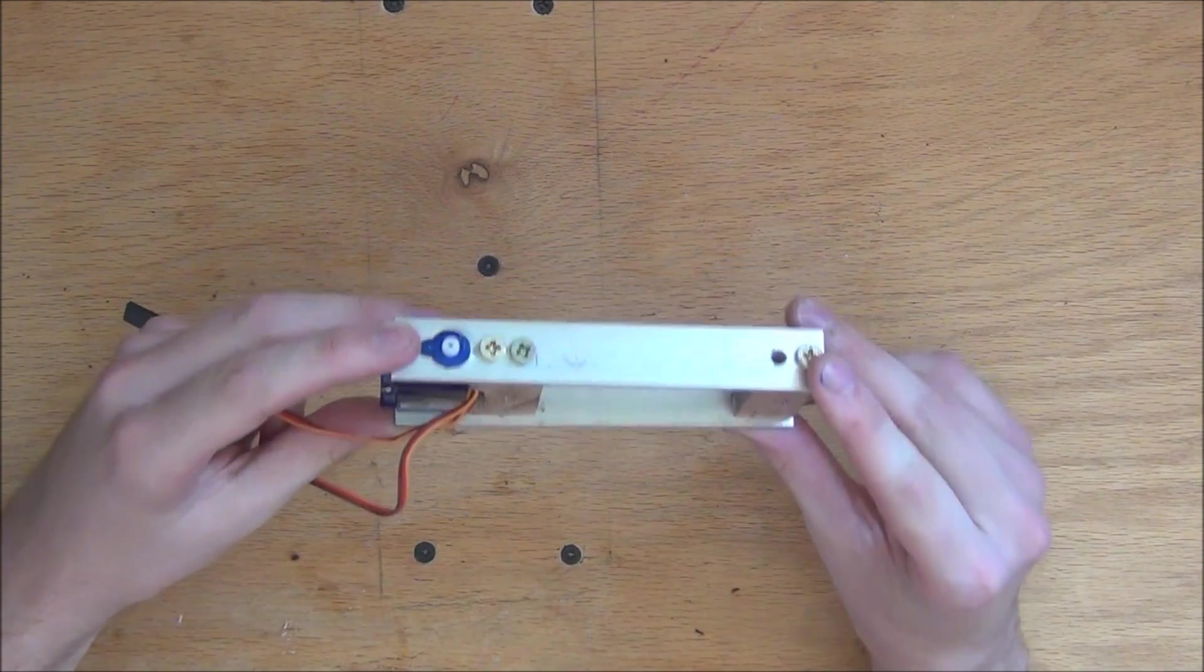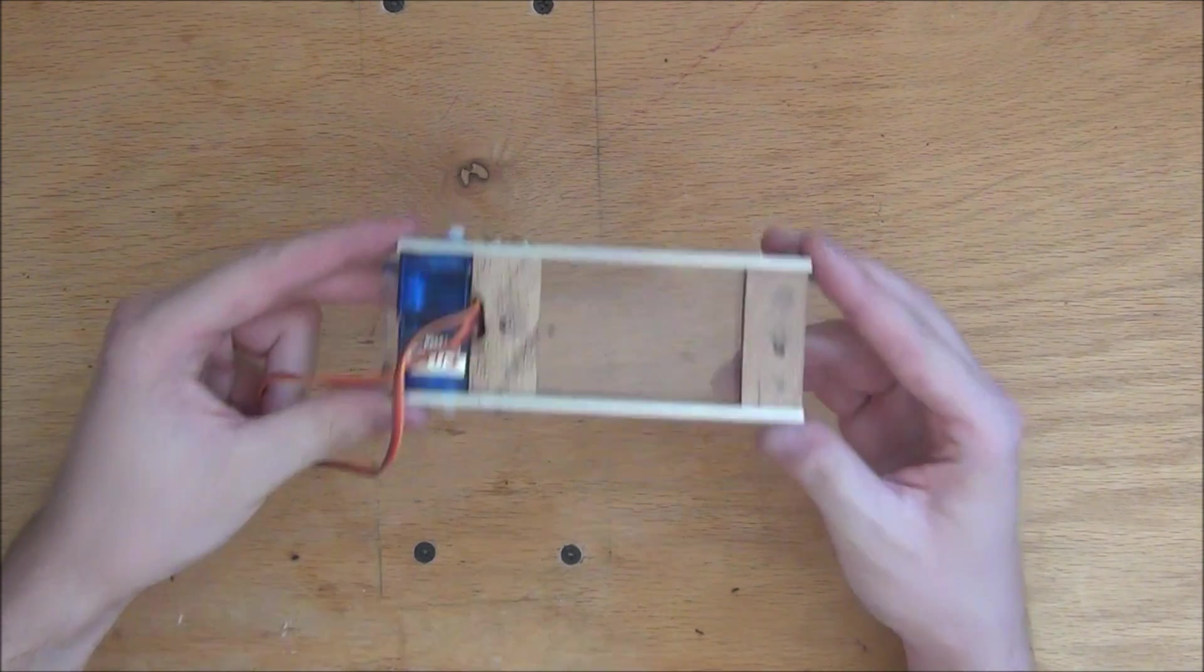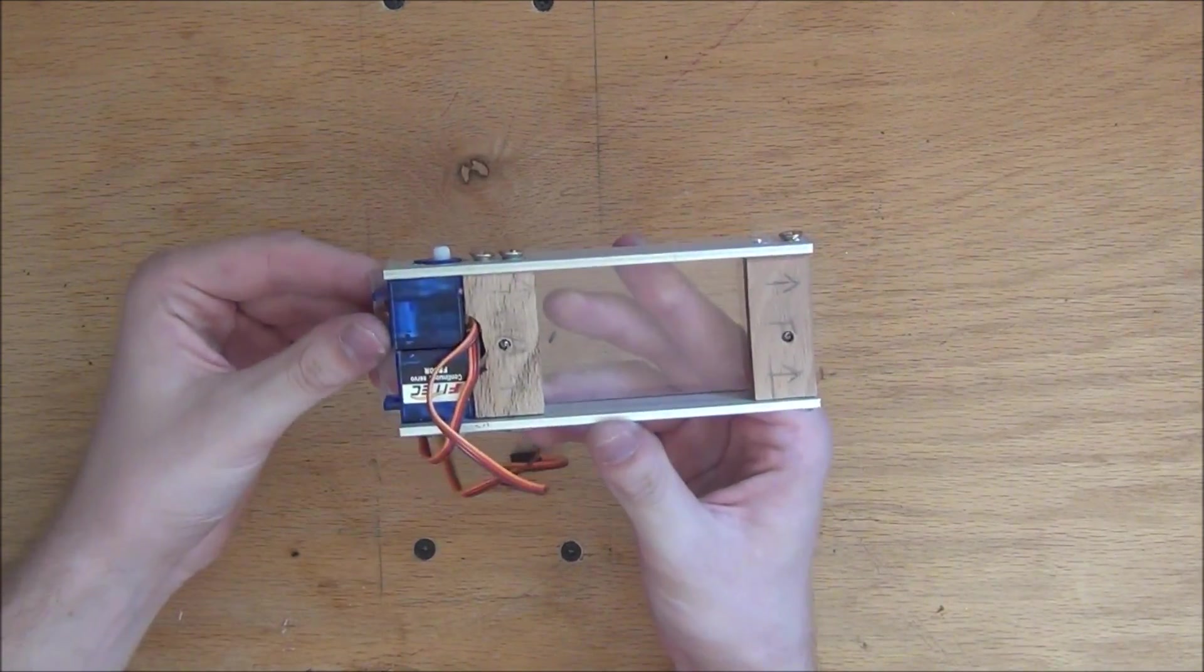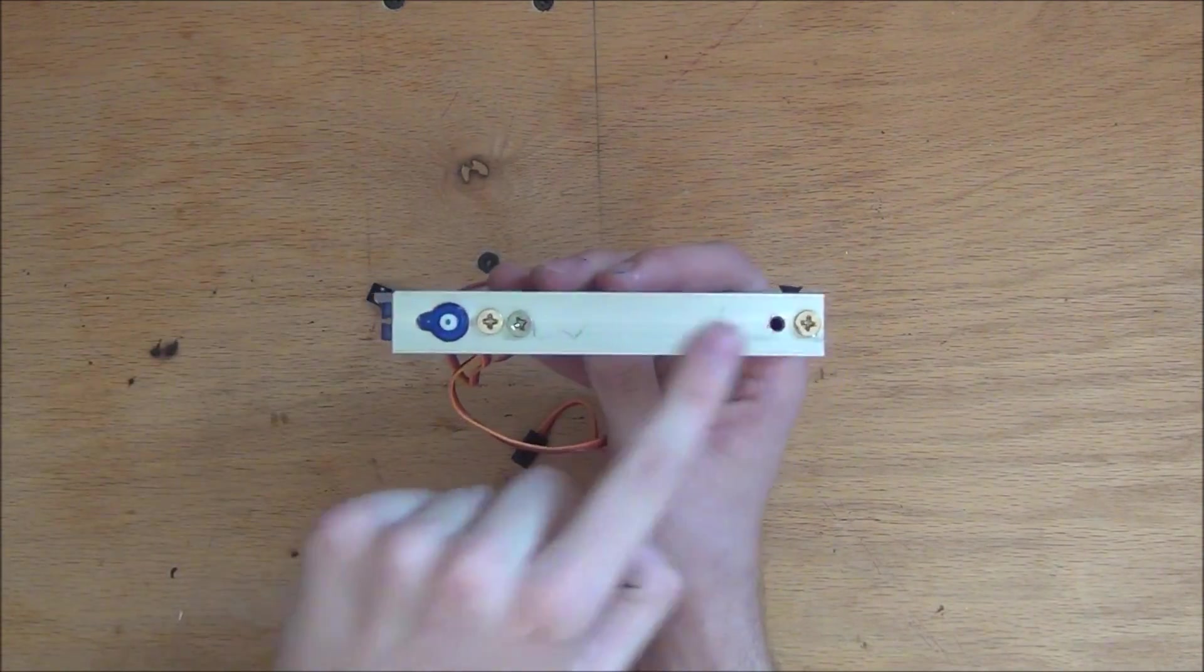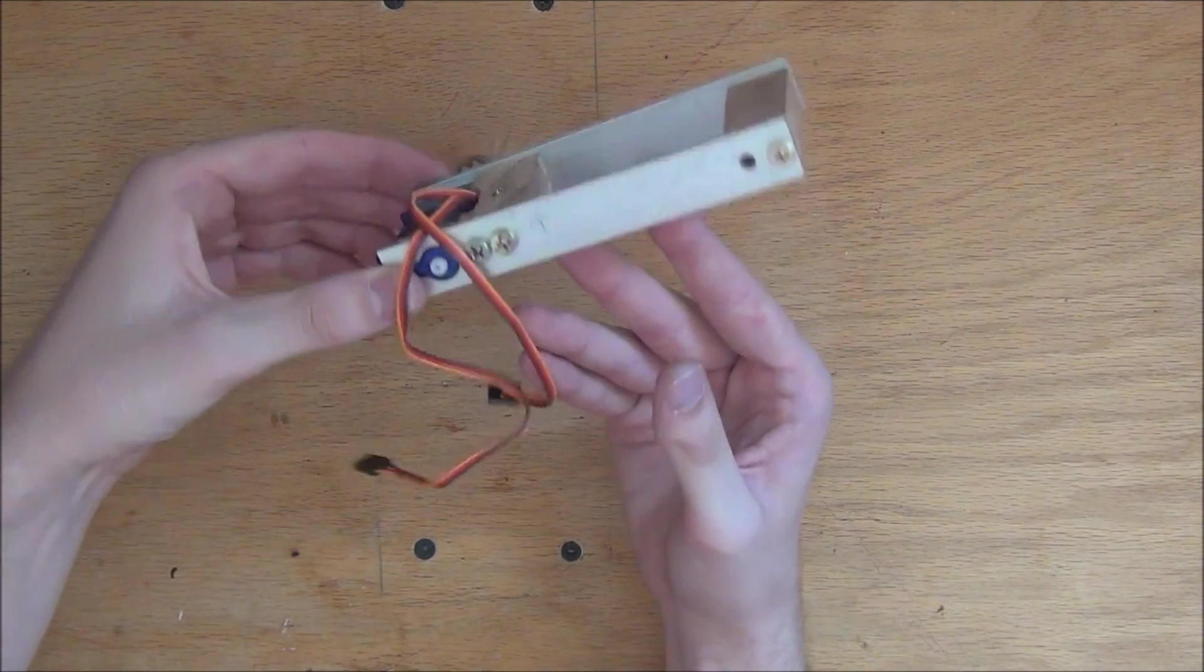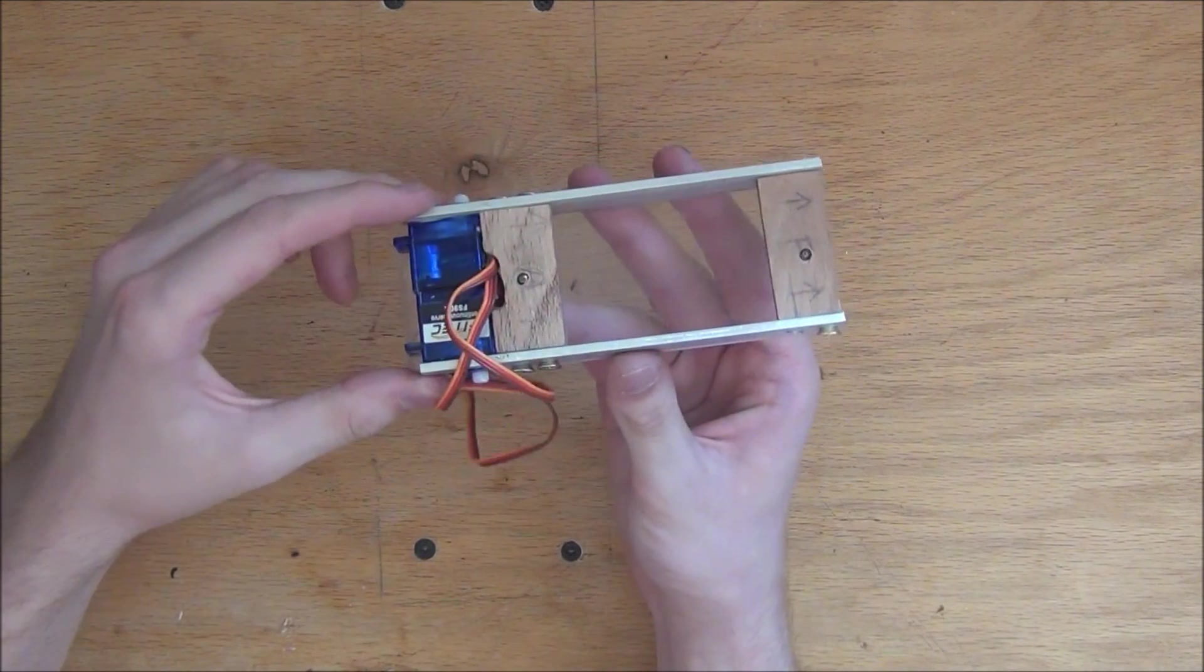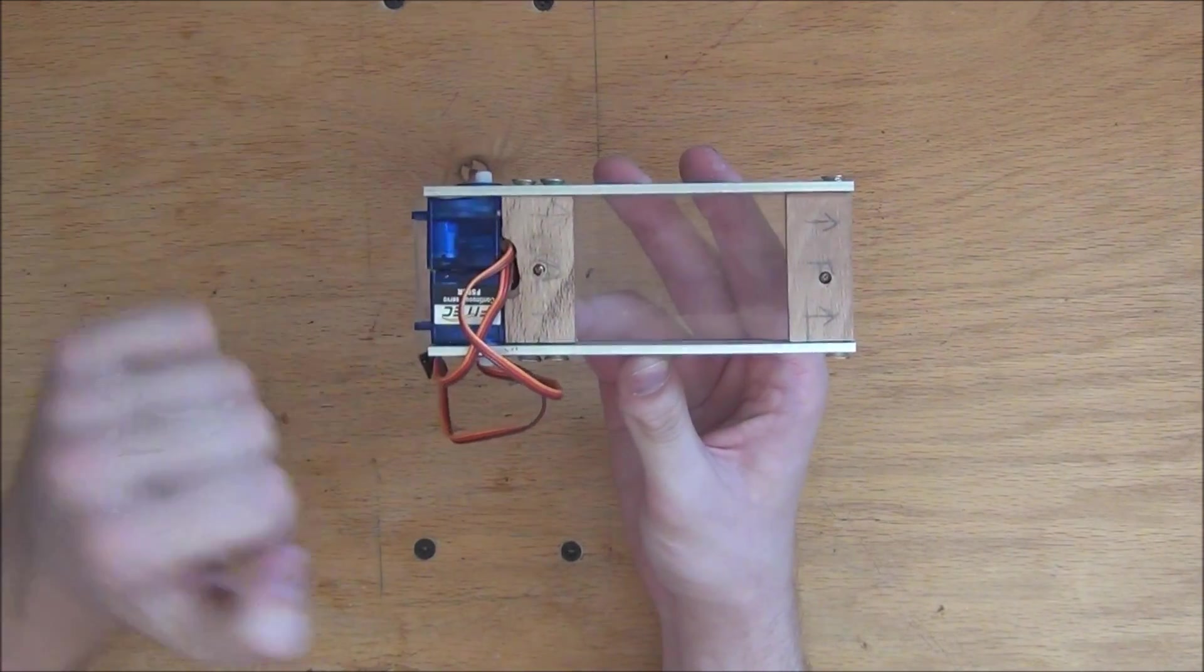So here we have the tank broken down into really its most fundamental part, and that is the chassis. The frame itself is made of aluminum and oak wood. As you can see, the side is three-quarters of an inch by five inch long aluminum strips, and both strips are held together by two oak wood blocks.